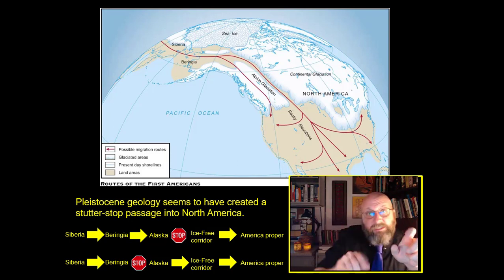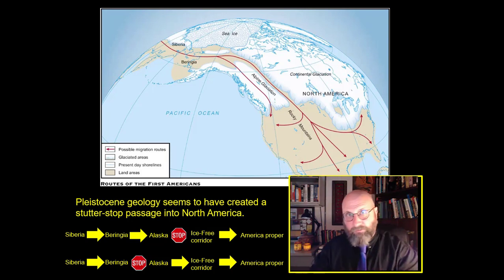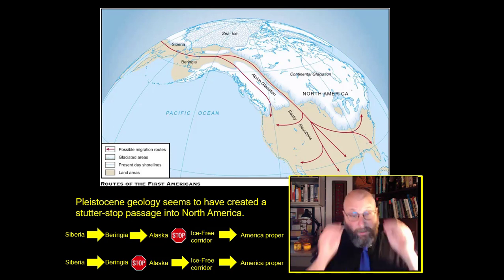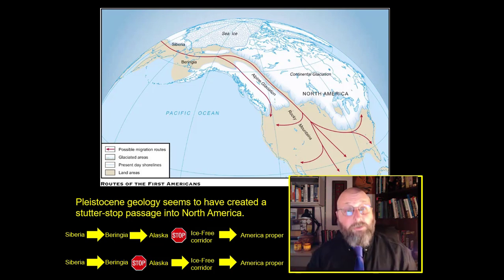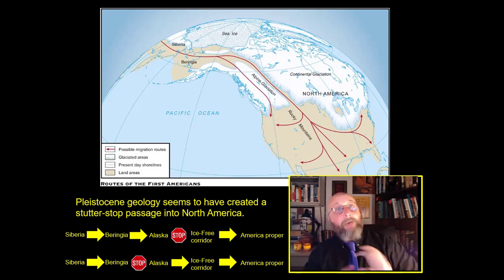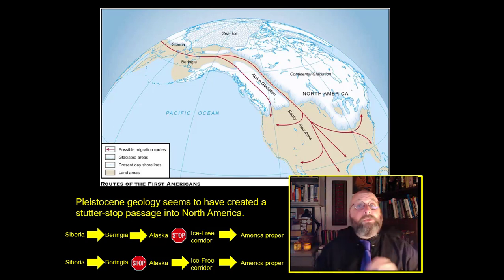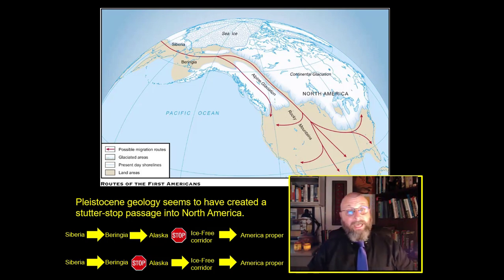As the Pleistocene became the Holocene, there was climactic instability in the middle — several centuries of warmth, then several centuries of cold, back and forth. This created a highly dynamic geology throughout the Earth that absolutely seems to have affected the migration into the New World. The theory that seems most convincing is that you didn't have a single passage from Siberia into North America, but rather a stutter-stop passage where the entire route was not open at the exact same moment.